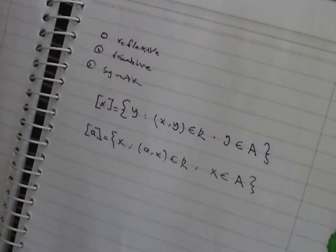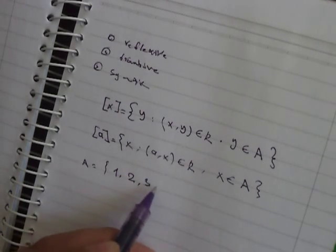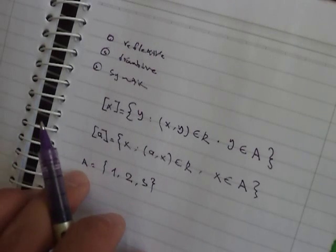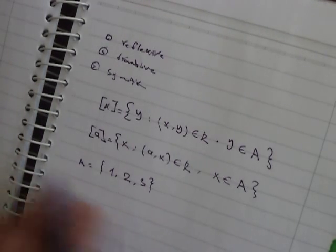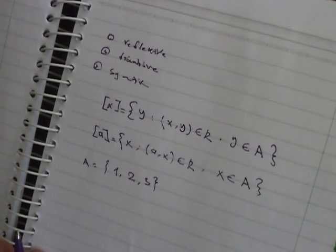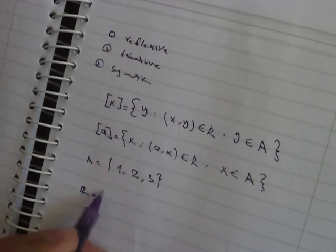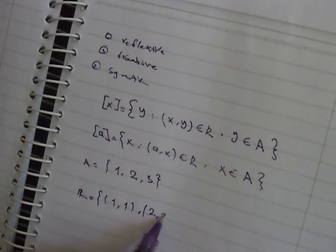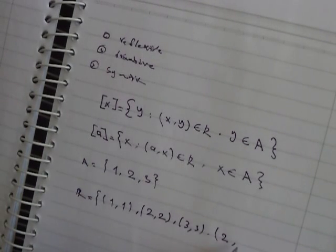For example, if you have the set A equals {1, 2, 3} — it is the set of all elements of A, so we only take 1, 2, and 3. Our relation for example is: (1,1), (2,2), (3,3), (2,3), and (3,2).